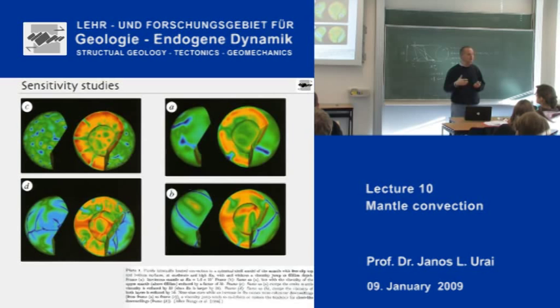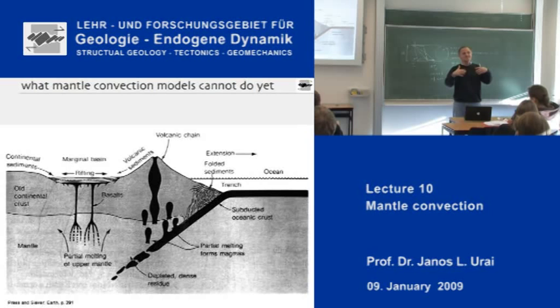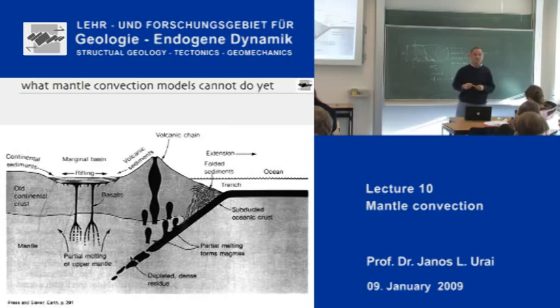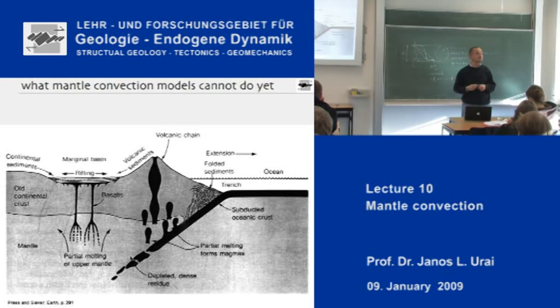What mantle convection models have not yet been able to make is plates. This outer shell of the Earth, where we have lithosphere, volcanism, earthquakes, and brittle processes, has never been spontaneously generated in mantle convection models. They are not yet rich enough to incorporate the fracturing processes and the localization processes in the lithosphere. So if you want, the holy grail of mantle convection modeling at the moment is to start a model and then spontaneously generate plates. That is something that may come in the next five years, and if it does, you will certainly see it on the front page of Nature, because it will be a very big breakthrough.